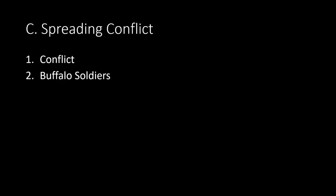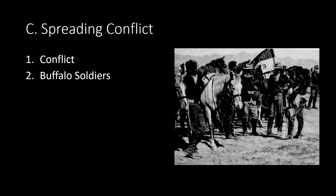Spreading Conflict: Many Native American groups across the West responded to the Sand Creek Massacre with outrage. Arapaho, Cheyenne, Sioux, and others attacked groups of white settlers. In response, many Confederate military prisoners were recruited to fight for the United States in the West, and Congress established two African American cavalry regiments that the Cheyenne called Buffalo Soldiers. These soldiers were known for their valor and hard work as they fought in the Indian Wars and built infrastructure across the West. They were called Buffalo Soldiers due to their kinky hair, which Native Americans said looked similar to the head of a buffalo.